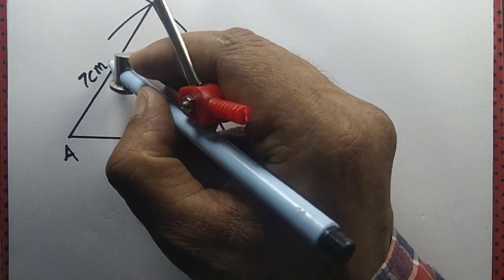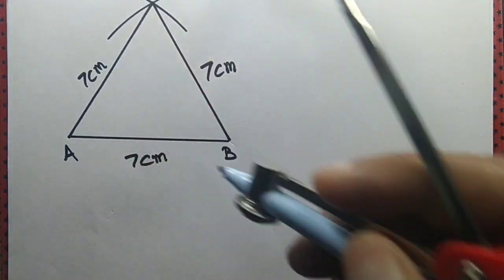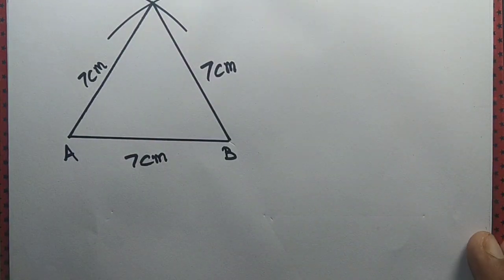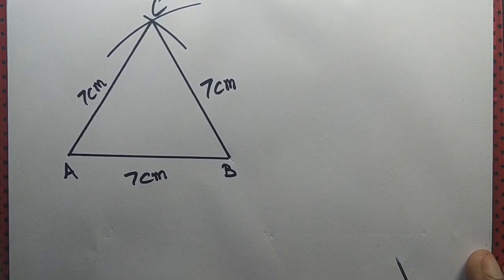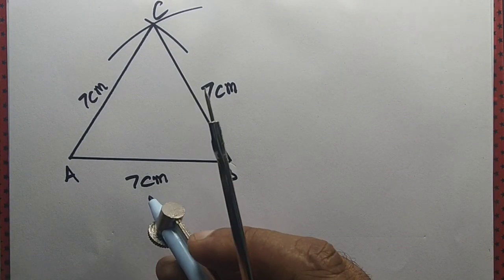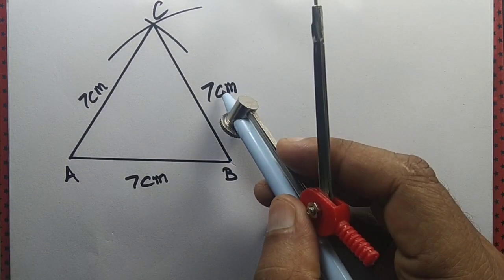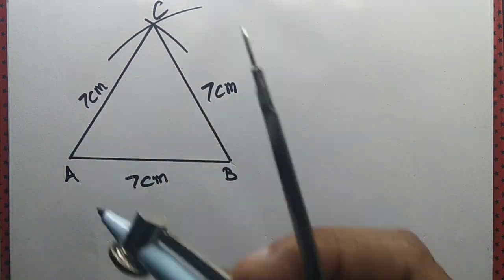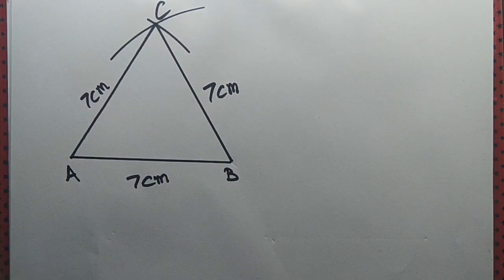And so we have drawn an equilateral triangle ABC, such that AB equals 7 cm, BC equals 7 cm, and CA equals 7 cm.